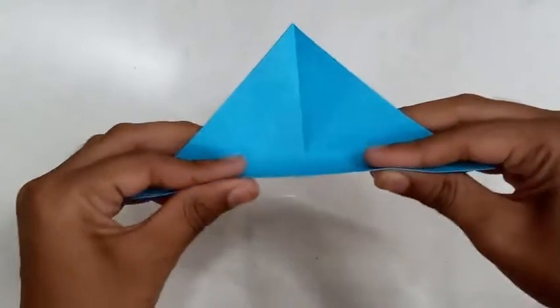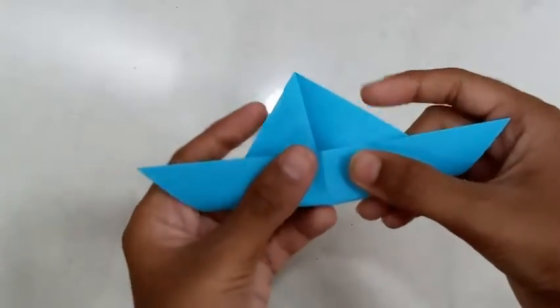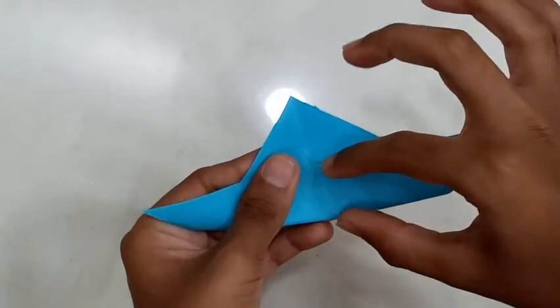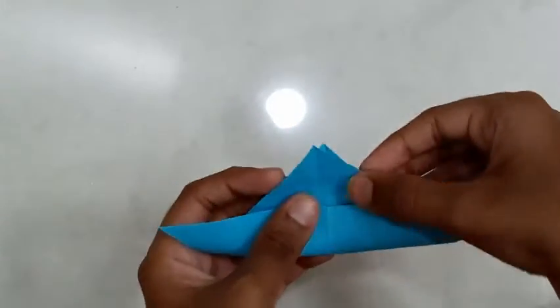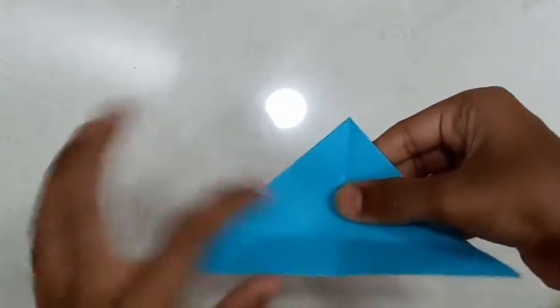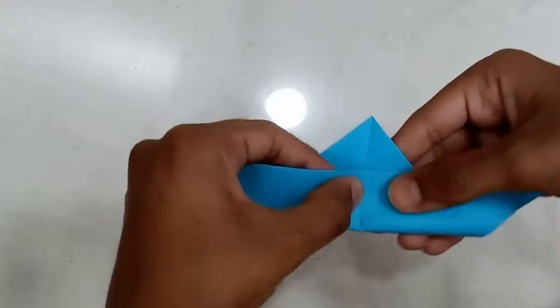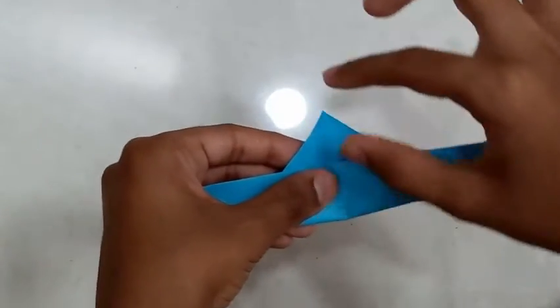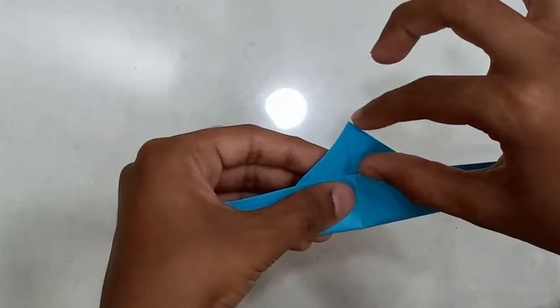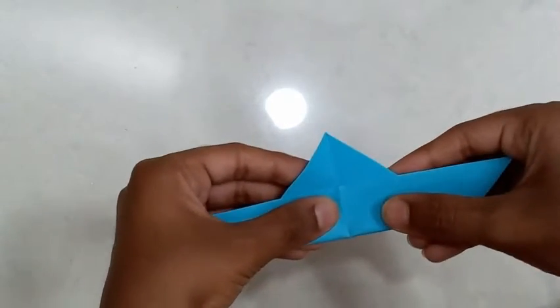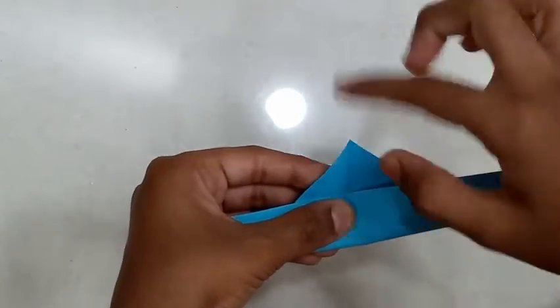Now fold this bottom edge so that this width is the same as this one. As you hold this, you should be able to hold this perfectly. Once done right, fold, aligning the sides correctly.